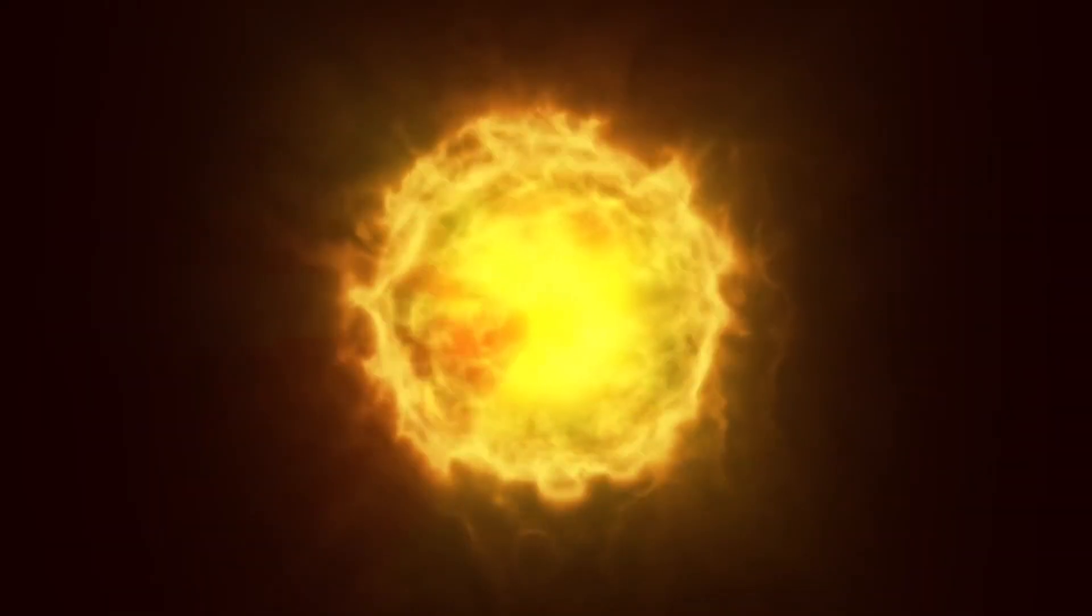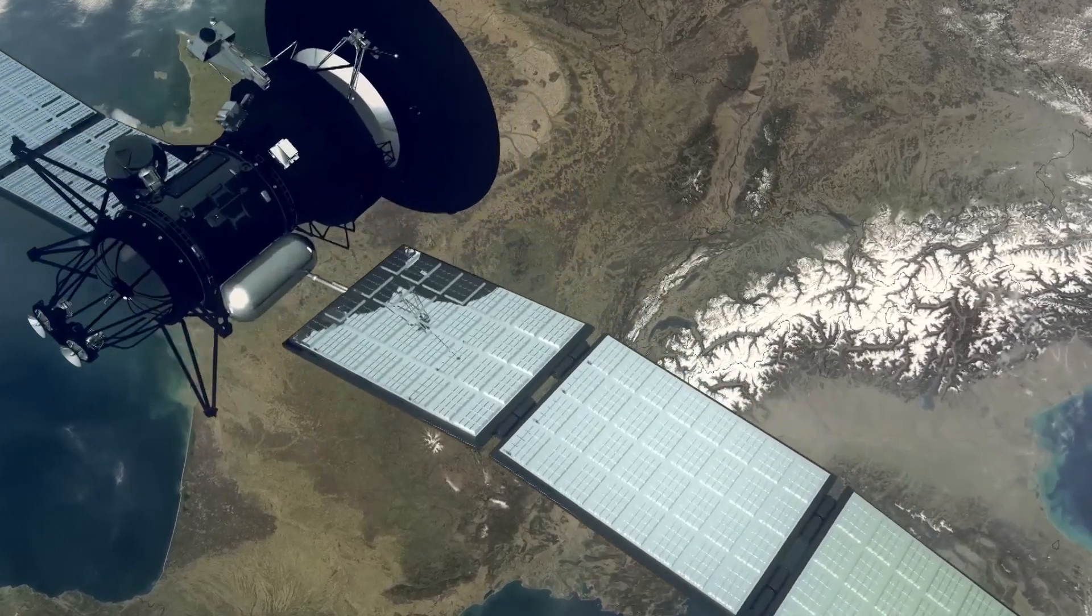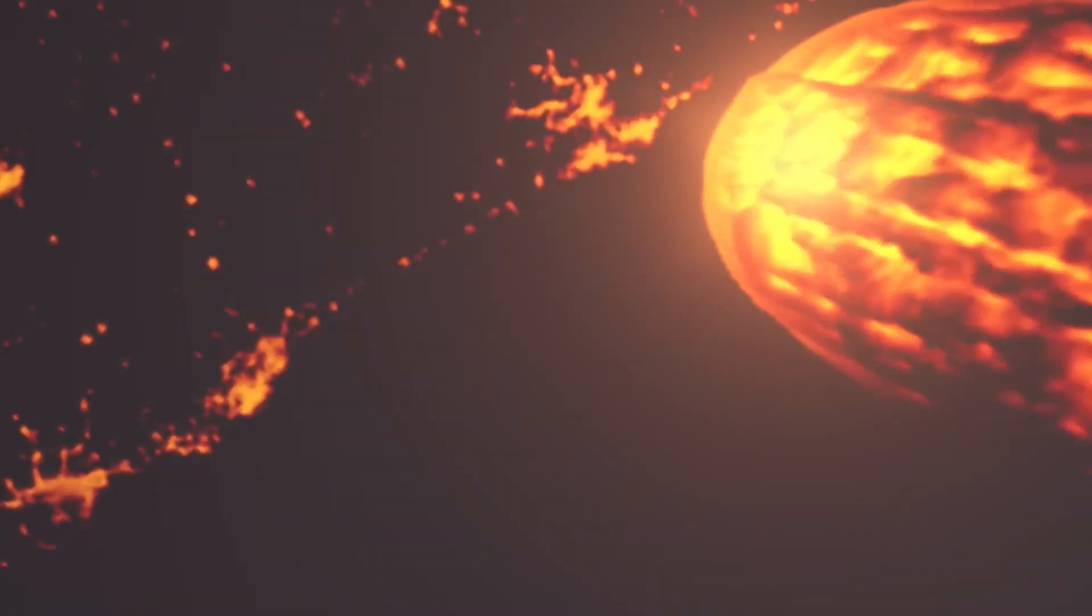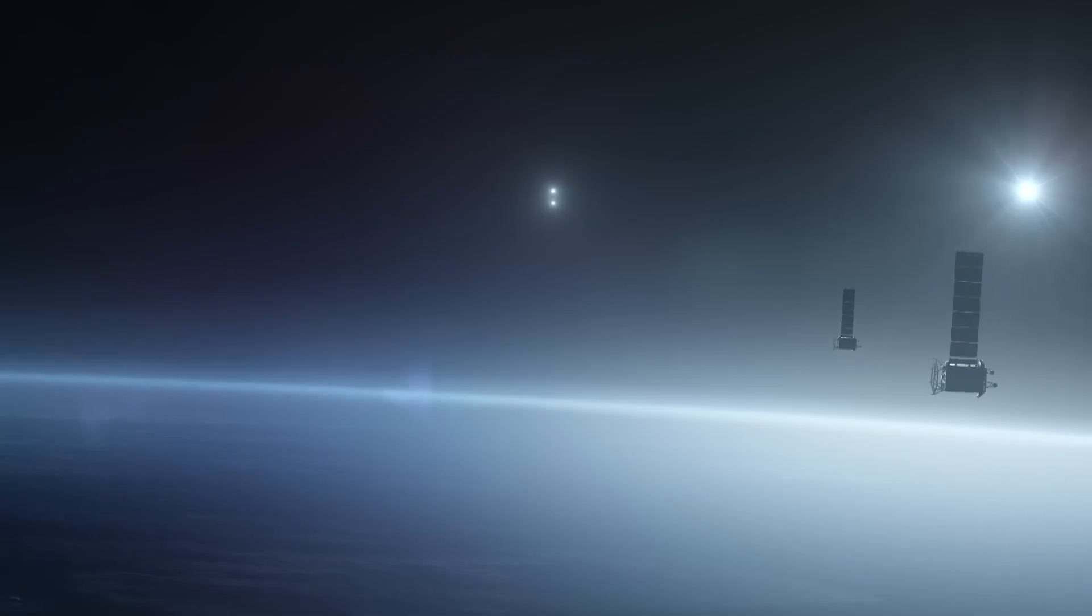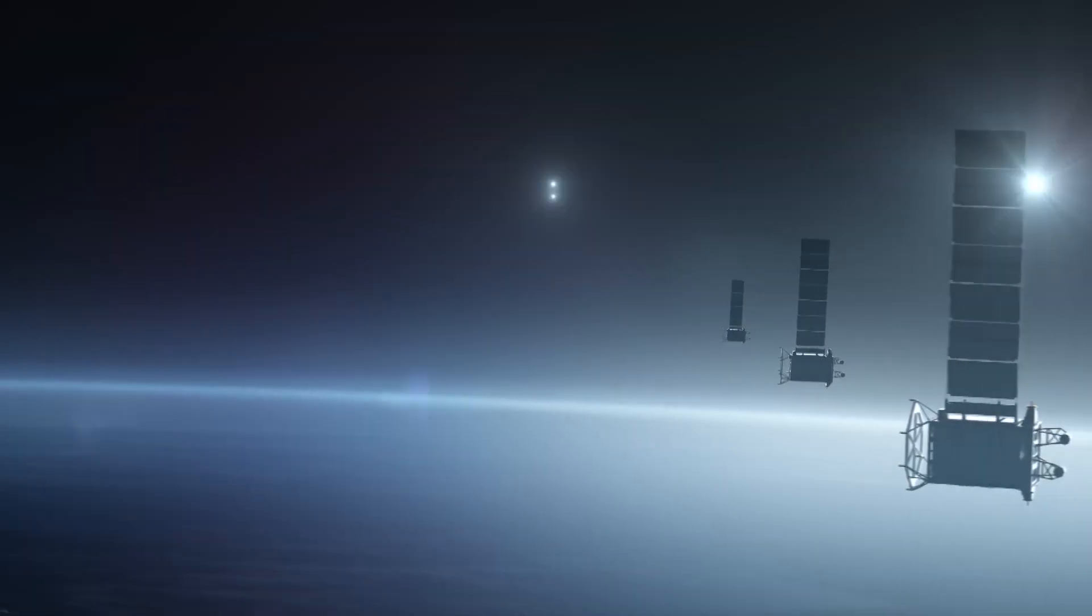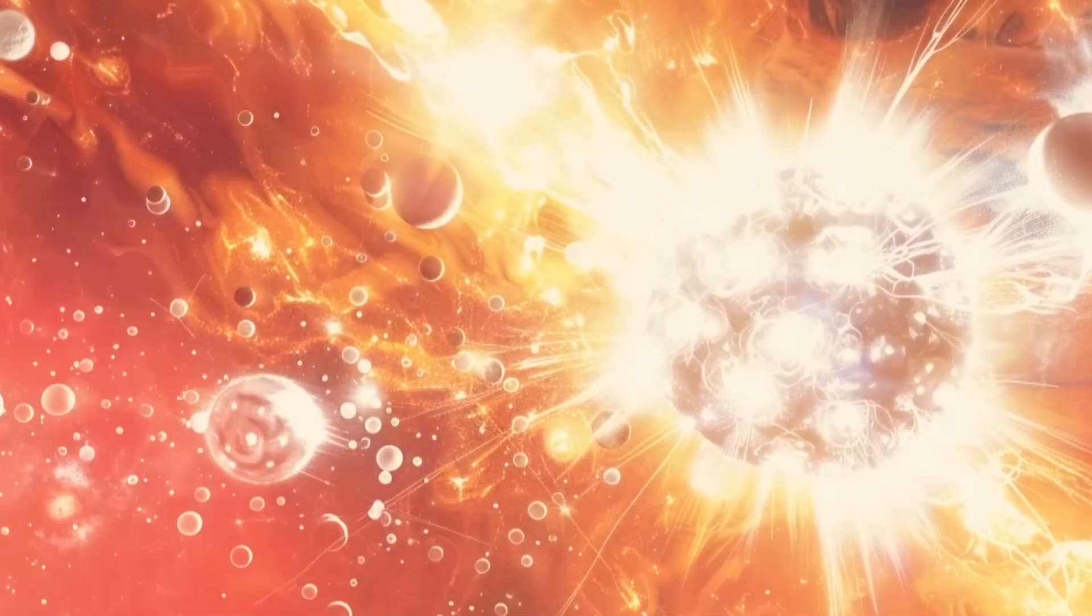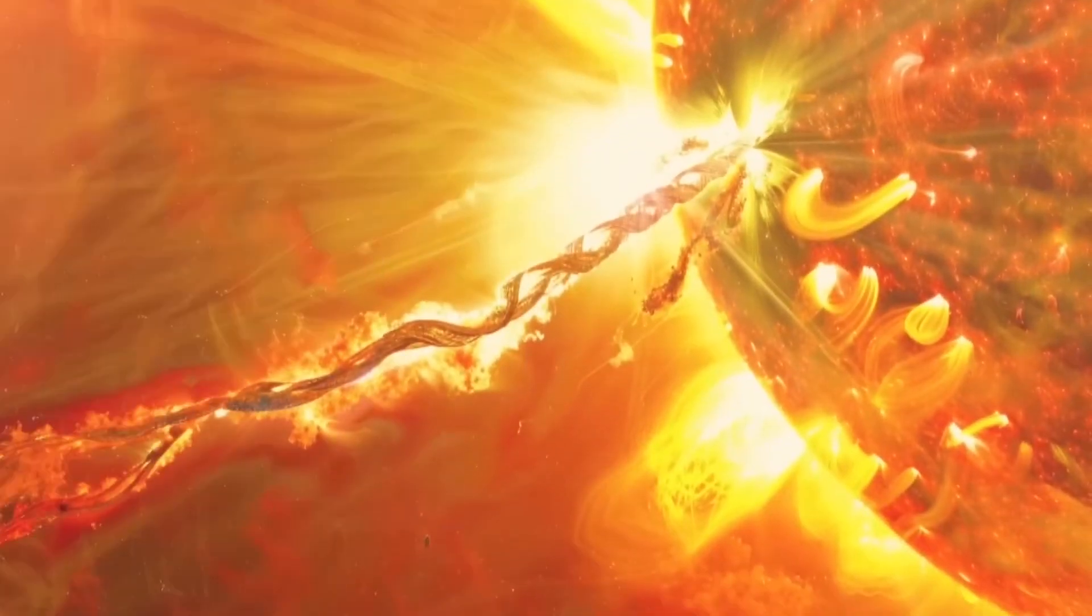But it's not all bad news. One of the most beautiful effects of increased solar activity is the appearance of auroras, also known as the northern and southern lights. These stunning displays are caused by particles from the sun interacting with Earth's magnetic field, creating vibrant ribbons of color in the sky. So, while the sun's magnetic flip can be disruptive, it also brings some of the most awe-inspiring natural phenomena our planet has to offer.